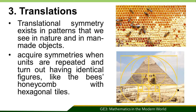On the other hand, translation is another type of symmetry. Translational symmetry exists in patterns that we see in nature and in man-made objects. Translational symmetry occurs when units are repeated and turn out having identical periods, like a Byzantine probe with hexagonal tiles.